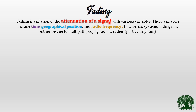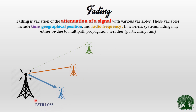Now let us put this concept in technical terms. The technical definition of fading is the variation of the attenuation of a signal. A signal gets attenuated whenever it travels a long distance or hits certain material. The variables — meaning contributors to this fading — may be time (your signal may get faded over time), geographical position or distance, and the frequency you are using. These are all the various contributors to fading.